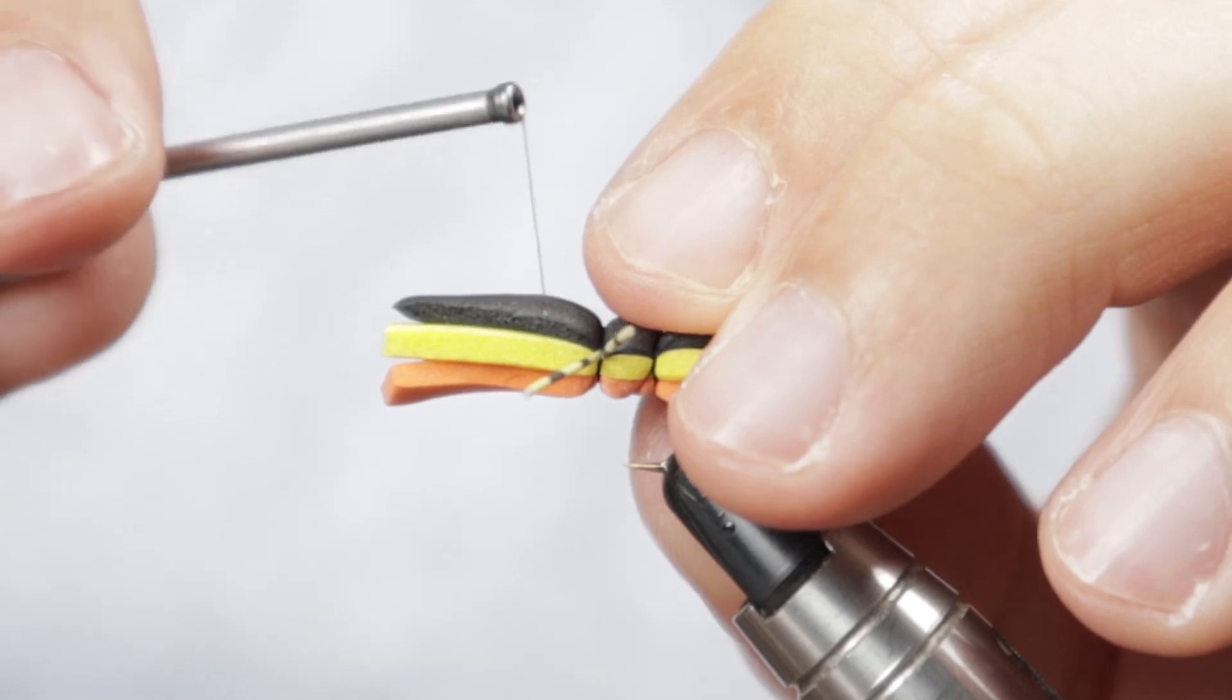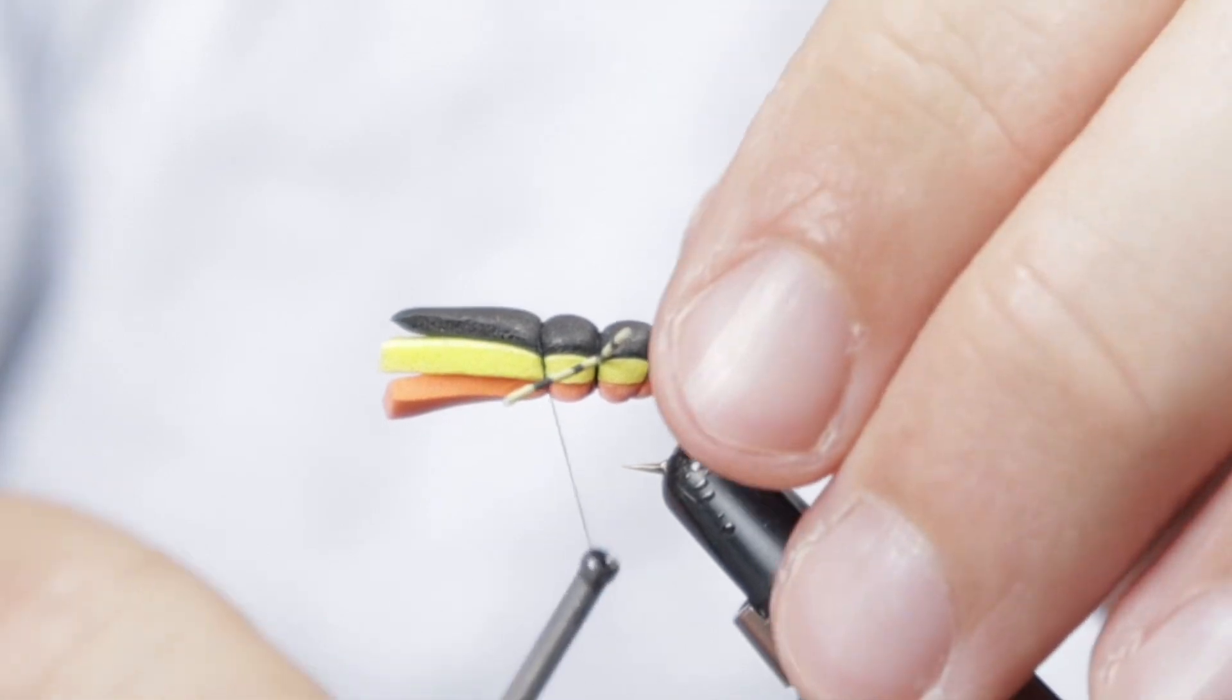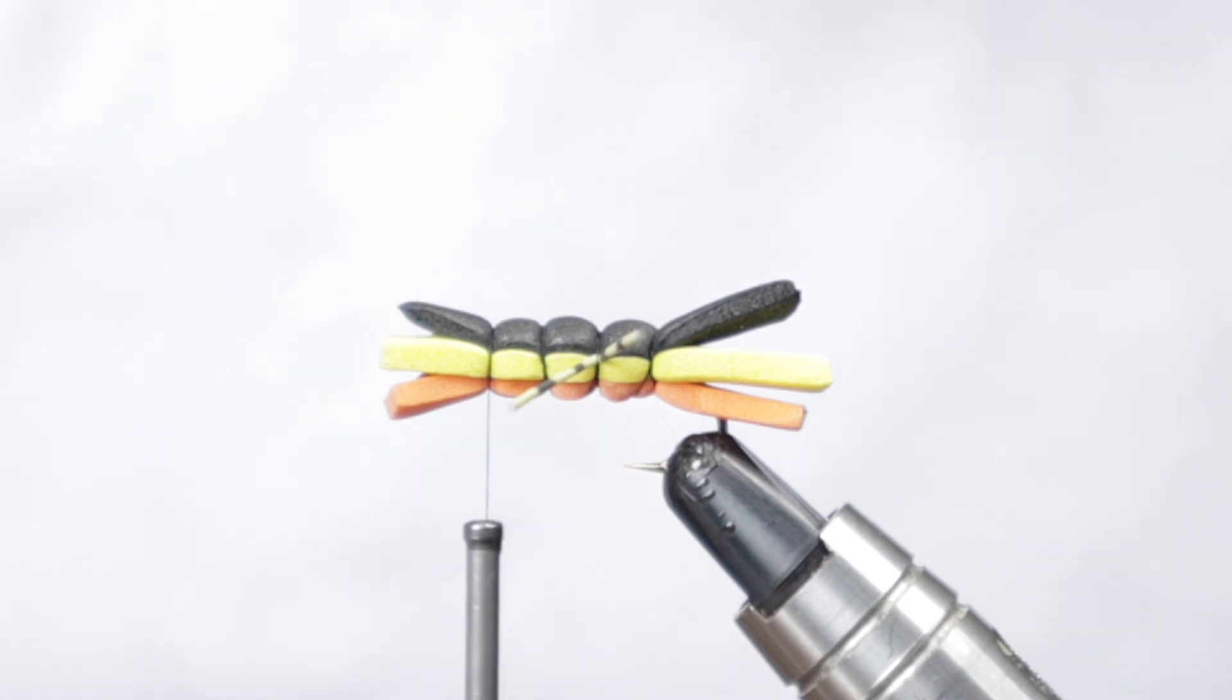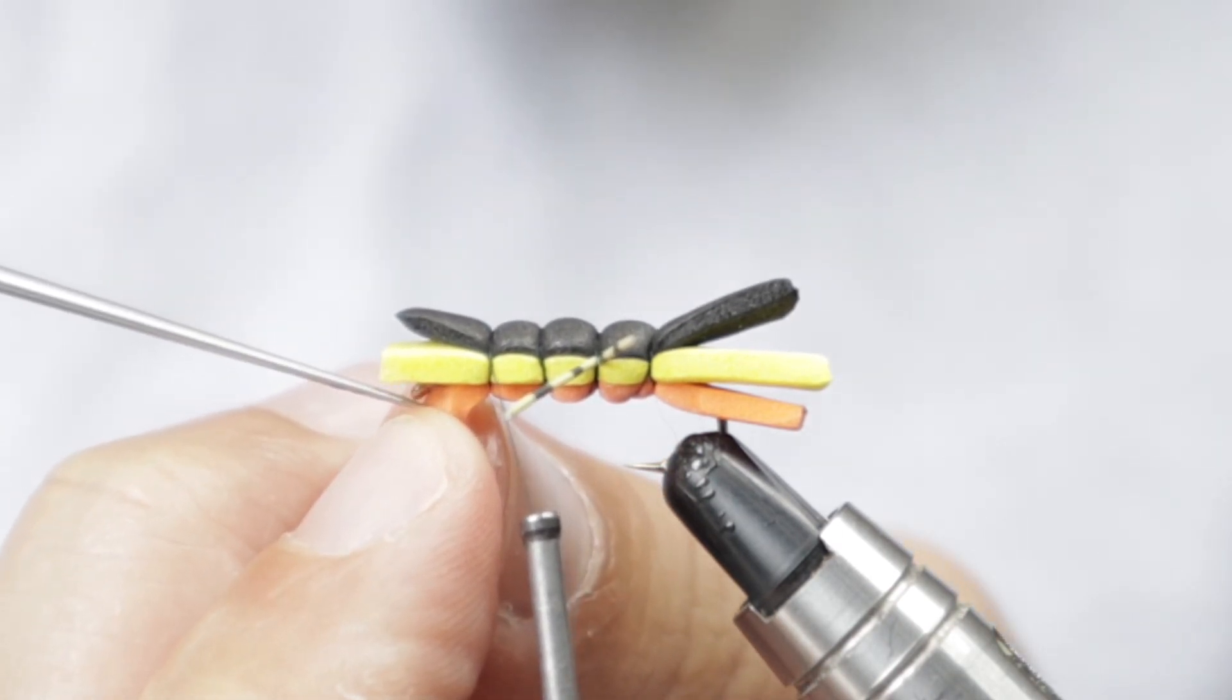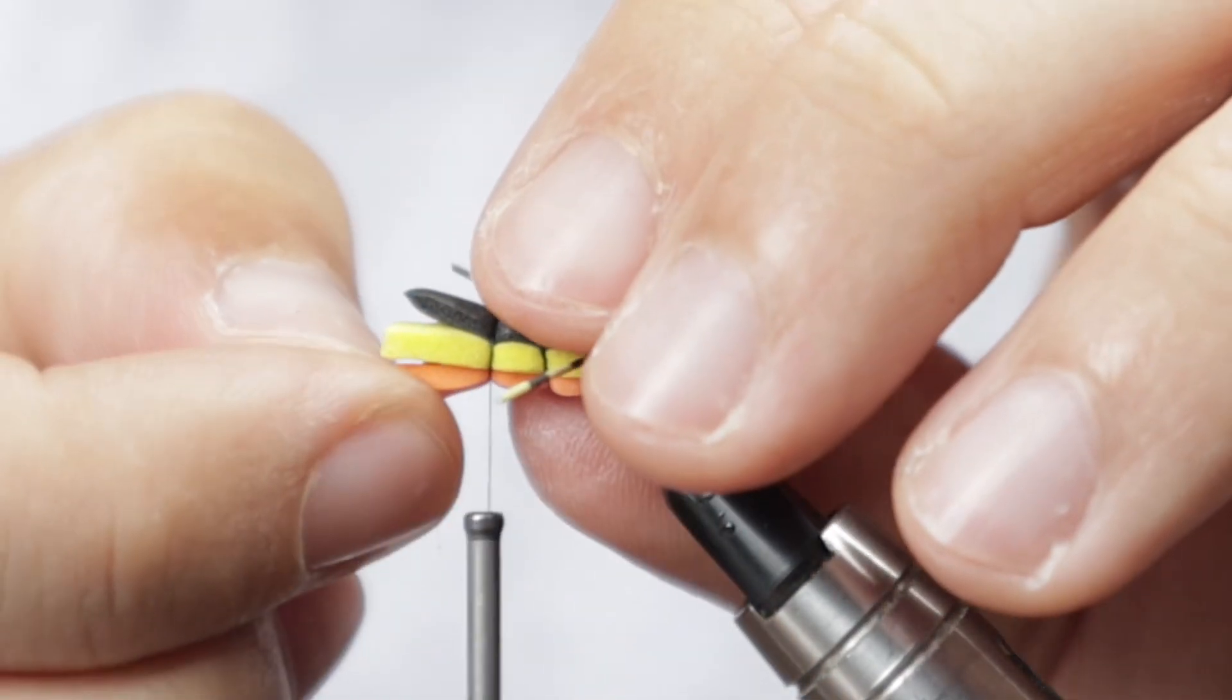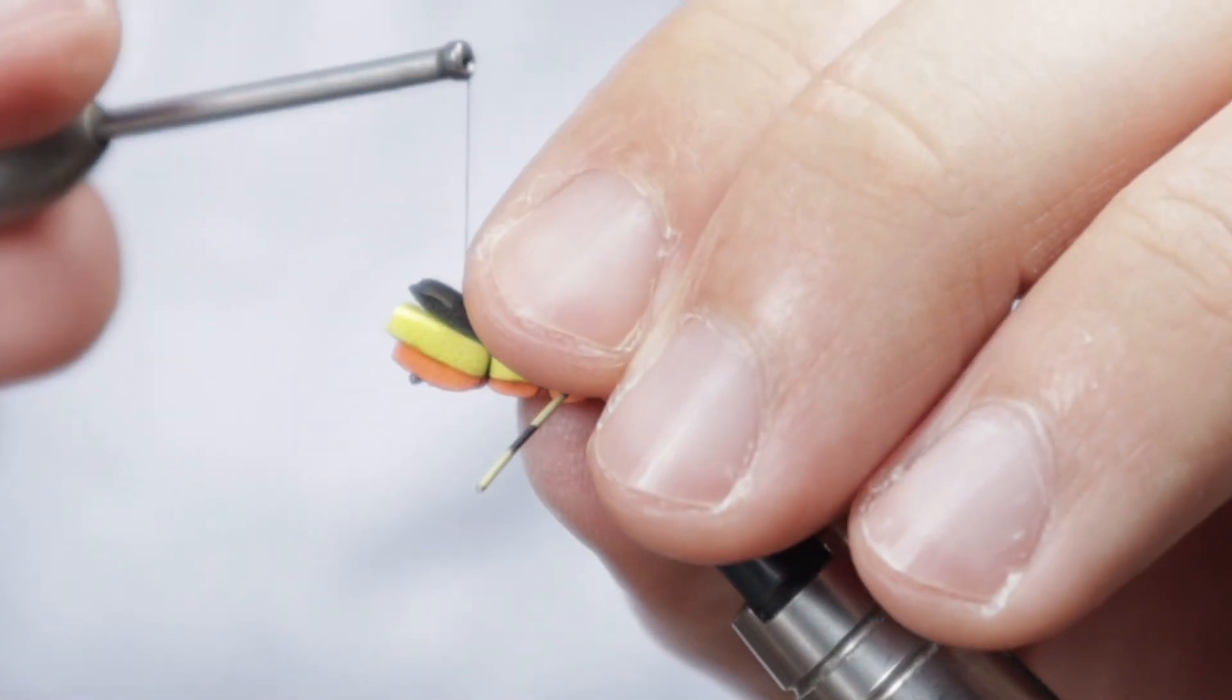Then continue up with your sectioning of the body. When you get to this stage, when you get a little bit closer to the eye, what you want to do is take your dubbing needle and put a hole through the bottom bit of foam, reasonable size, because you're going to pop this up and through.